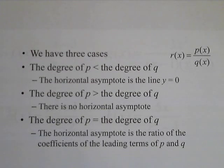When determining whether or not a rational function has a horizontal asymptote, we have three cases we need to attend to.